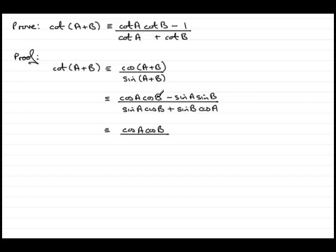So if we divide this term, cos A, cos B, by sine A, sine B, then we go on to the next term, sine A, sine B. Divide that by sine A, sine B.